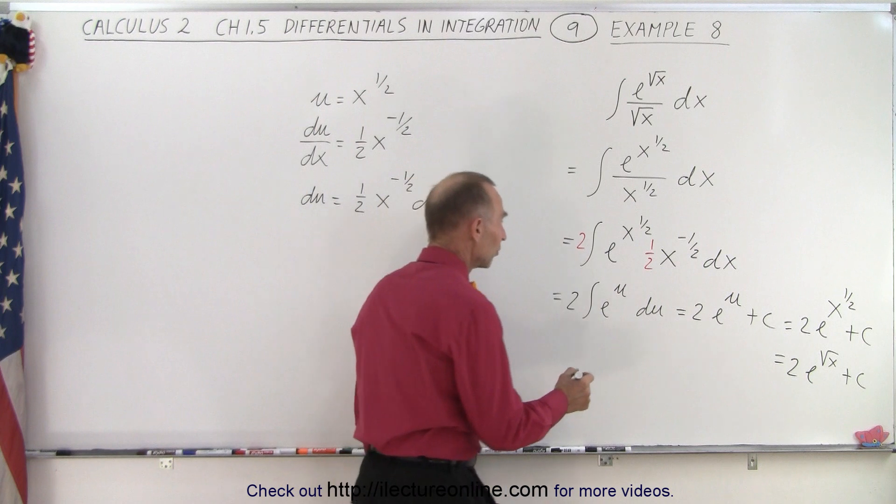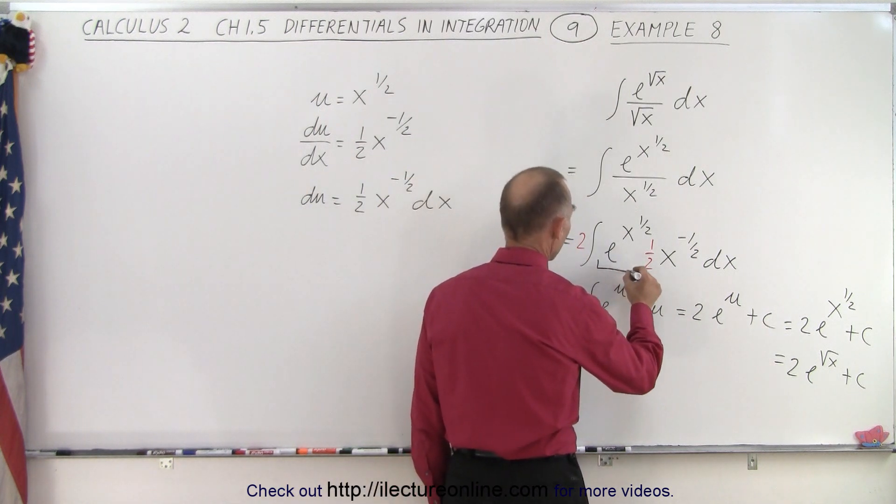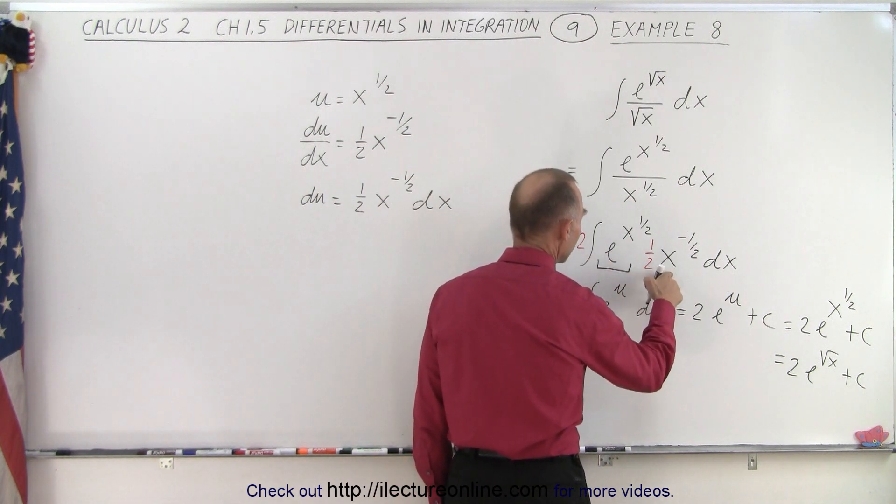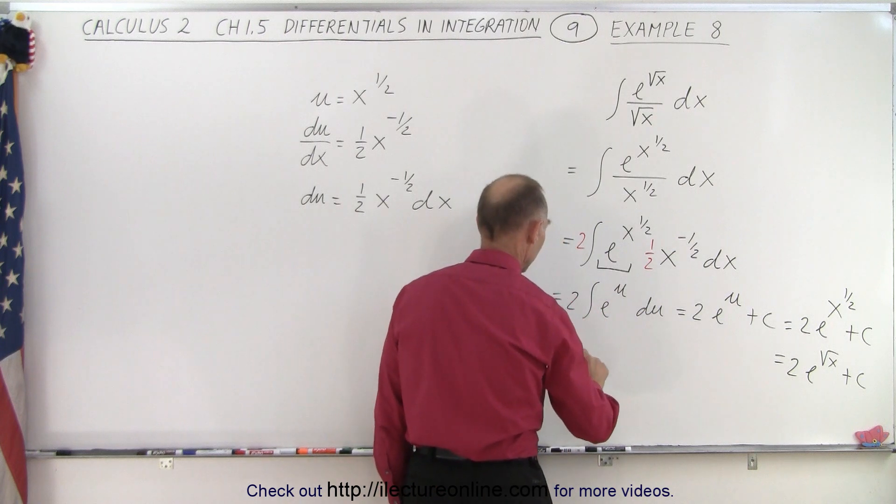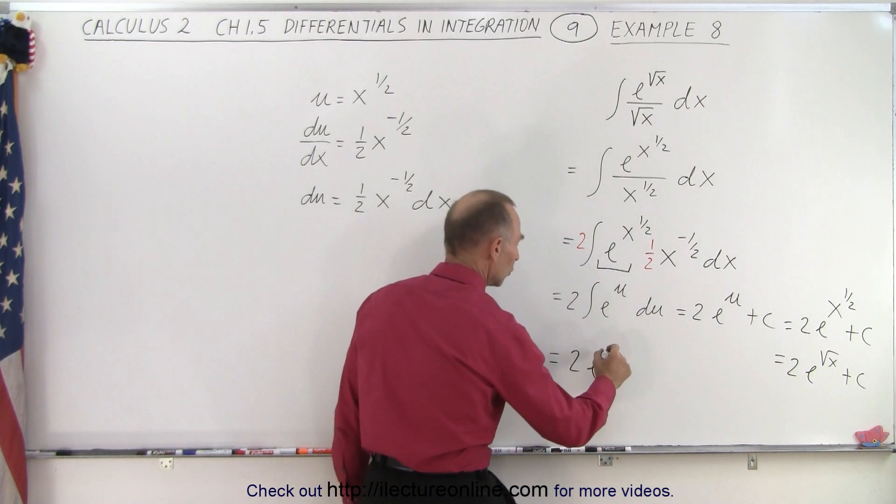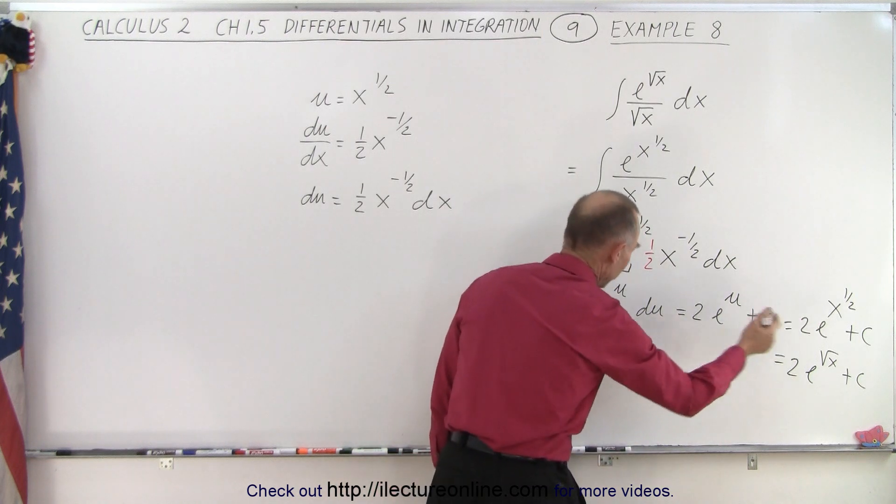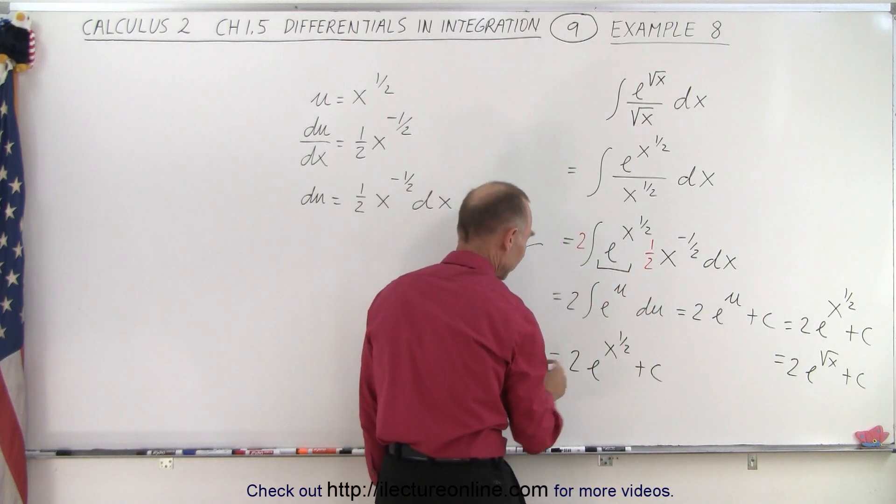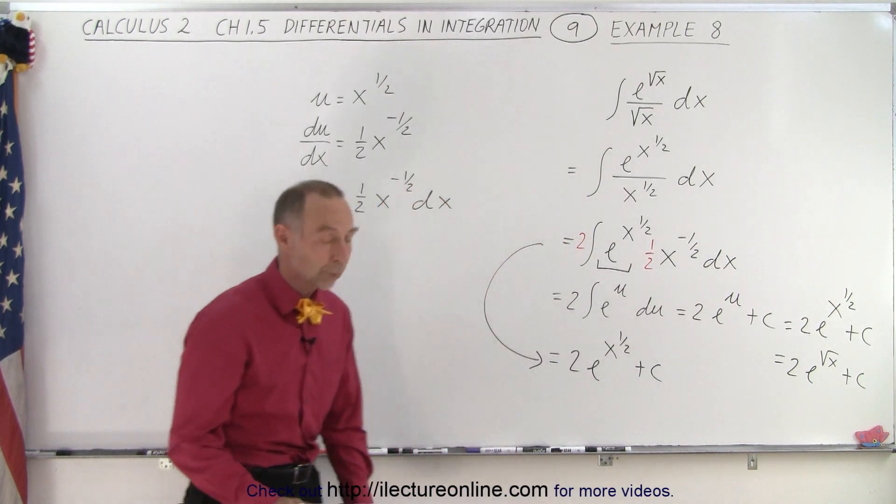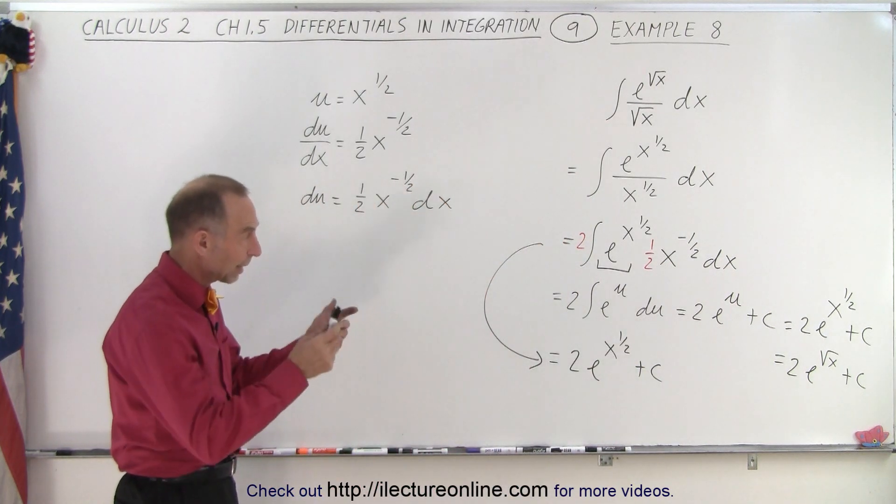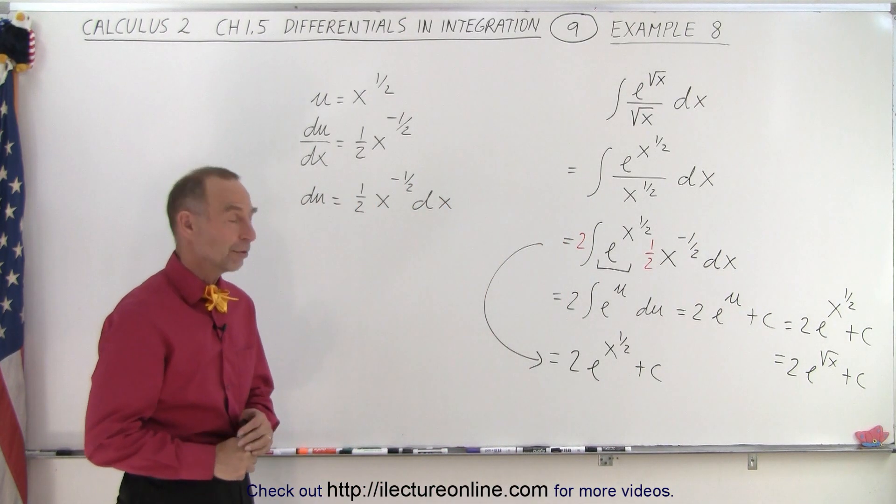Of course, sometimes you can just look at it and say, well, this is my e to the u, this is my du. So I can simply write this as 2e to the x to the 1/2 power plus a constant of integration, which right away you can go from this step directly to this step when you realize that this is what you are doing. And at that point, it becomes pretty easy and straightforward.